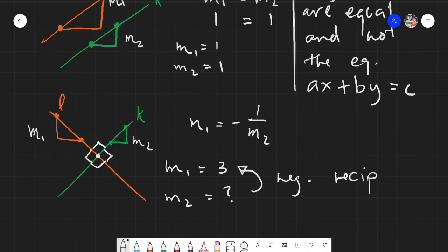Therefore, my M sub 2 should be negative one-third because this is 3, so it must be this one. So that is the definition of the perpendicular lines when it comes to analytic geometry.